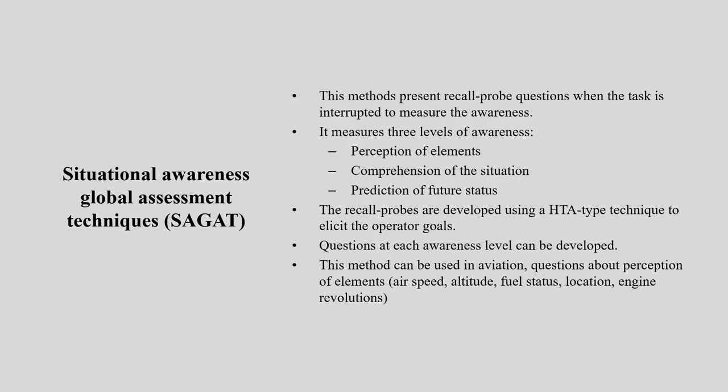Questions at each awareness level can be developed across different stages. This method can also be used in aviation — questions about perceptions of elements like airspeed, altitude, and fuel state. When there is an air accident, how and why it happened — it may have sequential errors. How do we analyze it and how can design prevent such incidents further? This type of tool gives such data. It is very useful in many critical situations — not only the aviation industry, but in many industries where many parallel and cross-connecting informations are going on and affecting the system.